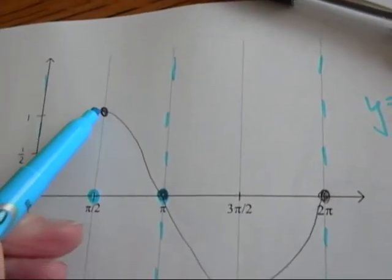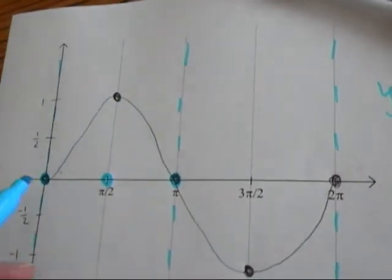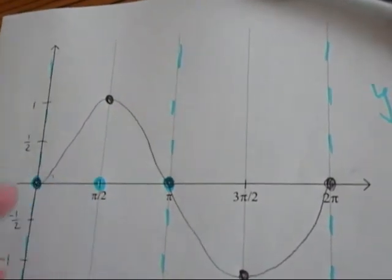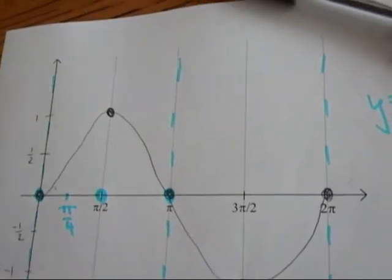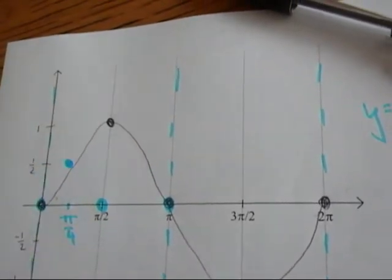My second point is my maximum. My second point needs to go right in between these two, so it'll be at pi over four. But now my maximum, remember, is only one half. So it'll go right here.